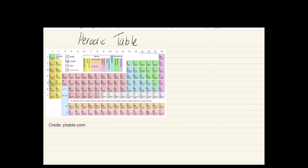Hello YouTube, this is Basic Chemistry second video. In this video we will cover the periodic table and some of its properties. In the last video we learned that an atom is made out of electrons, protons, and neutrons. Remember that I told you guys you can identify what element an atom is just by looking at the number of electrons, protons, and neutrons they have, and that is true.